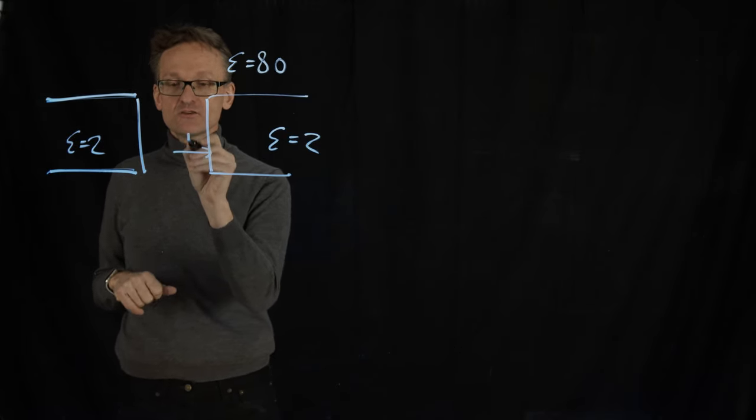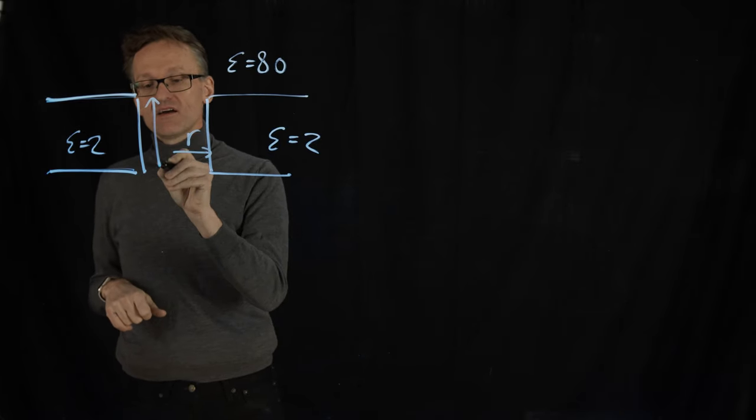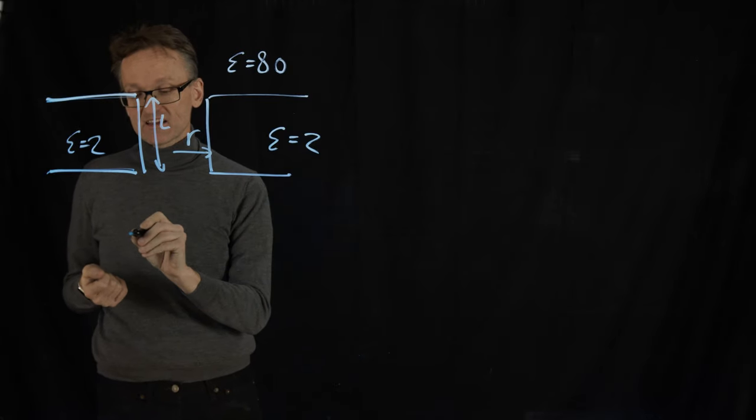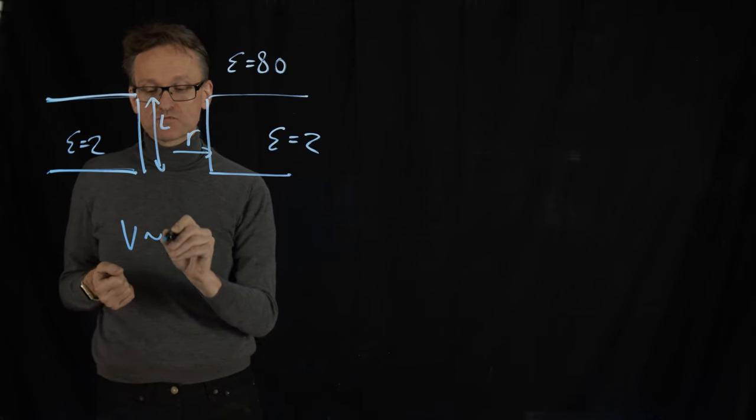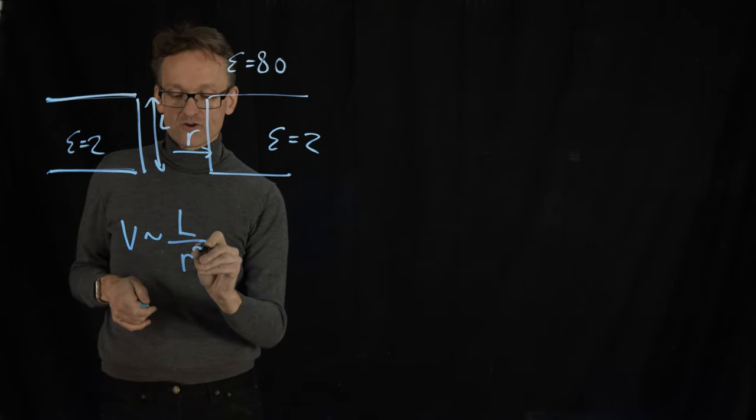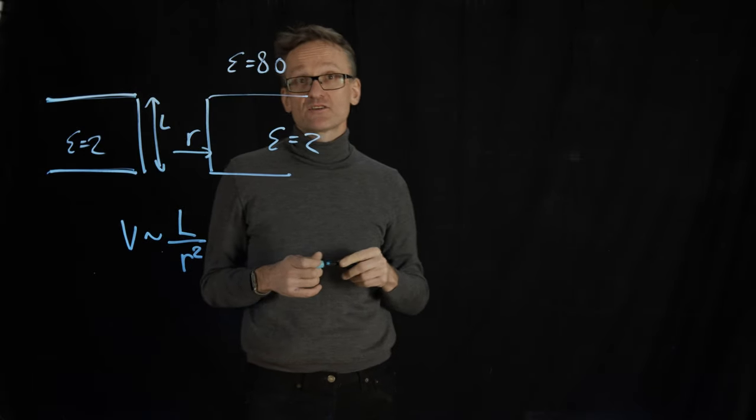So Parcegian showed that if you have a radius of a pore there and a length l, he just used fairly simple physics to calculate that the potential is proportional to the length divided by r squared, and then some other factors epsilon and everything.